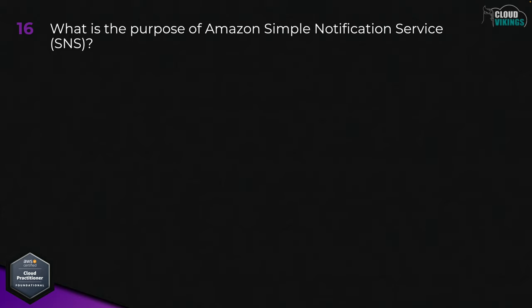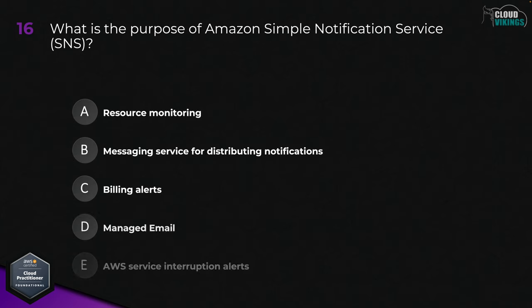Question sixteen: what is the purpose of Amazon Simple Notification Service, or SNS? Options are: A, resource monitoring; B, messaging service for distributing notifications; C, billing alerts; D, managed email; or E, AWS service interruption alerts. The correct answer is B, a messaging service for distributing notifications.